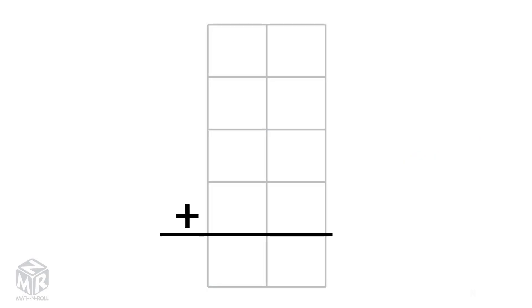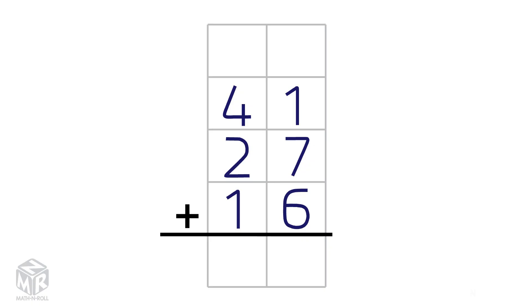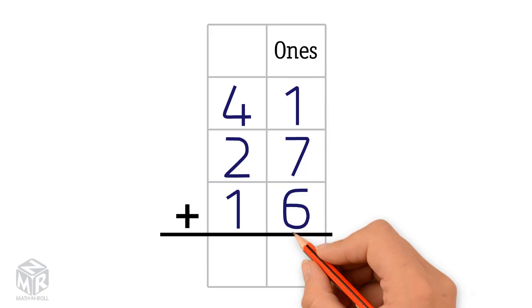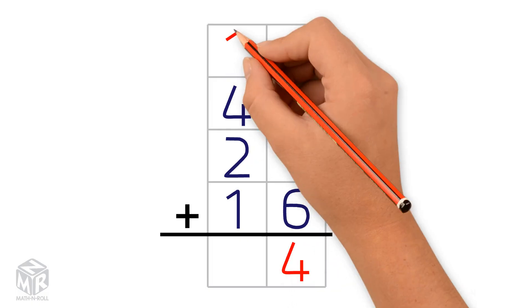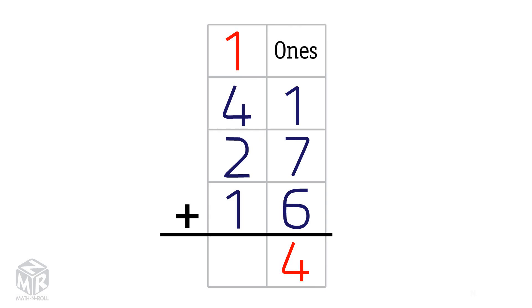Let's try another example: 41 plus 27 plus 16. We can't make a 10, so we add from top to bottom. 1 plus 7 plus 6 equals 14. We put the 4 in the ones column and the 1 in the tens column.